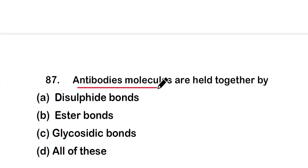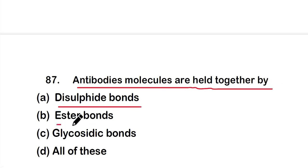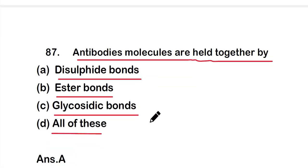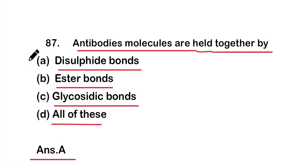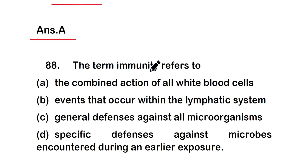Question number 87: Antibody molecules are held together by — option A: disulfide bonds, option B: ester bonds, option C: glycosidic bonds, or option D: all of the above. The right answer is option A — antibody molecules are held together by disulfide bonds.